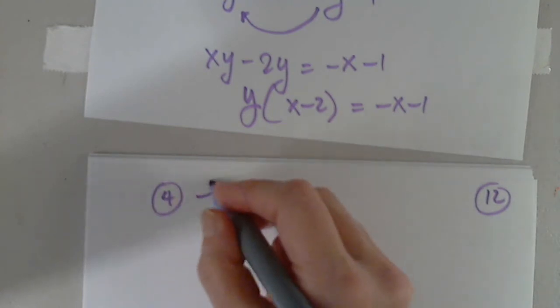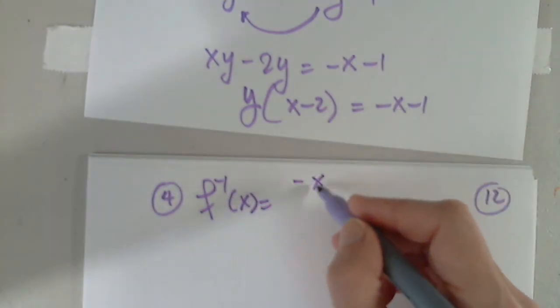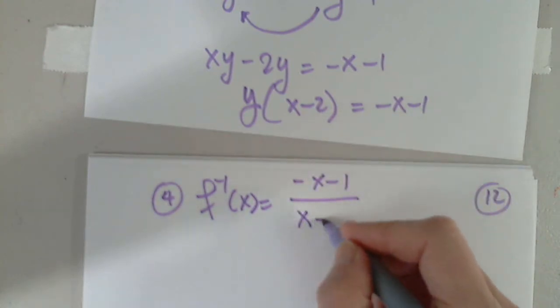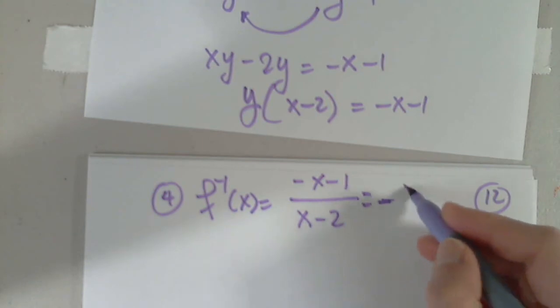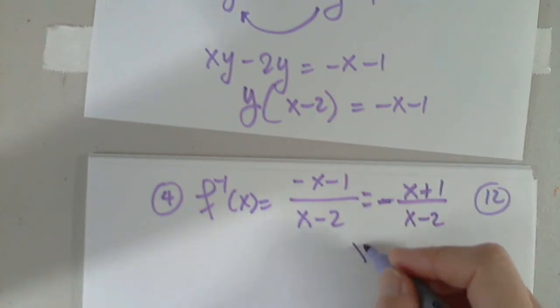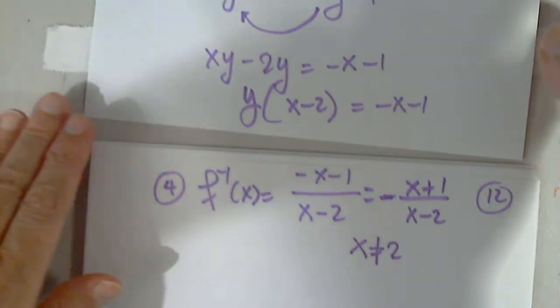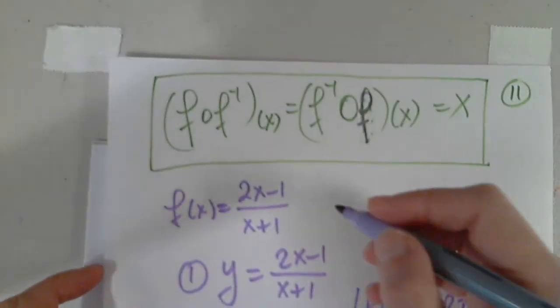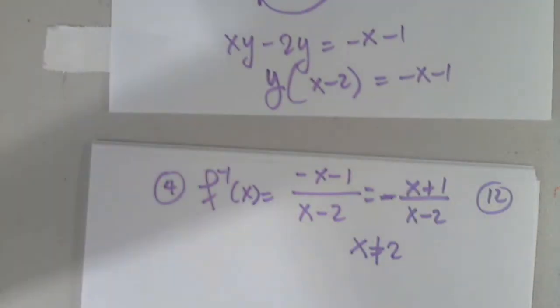So, in step 4, I have f inverse of x, as being negative x minus 1 over x minus 2. I could pull out negative 1 in front, and then I get x plus 1 over x minus 2. Of course, the domain does not accept 2. 2 is not in the domain. And here, we should have written that the domain of that function cannot have negative 1.